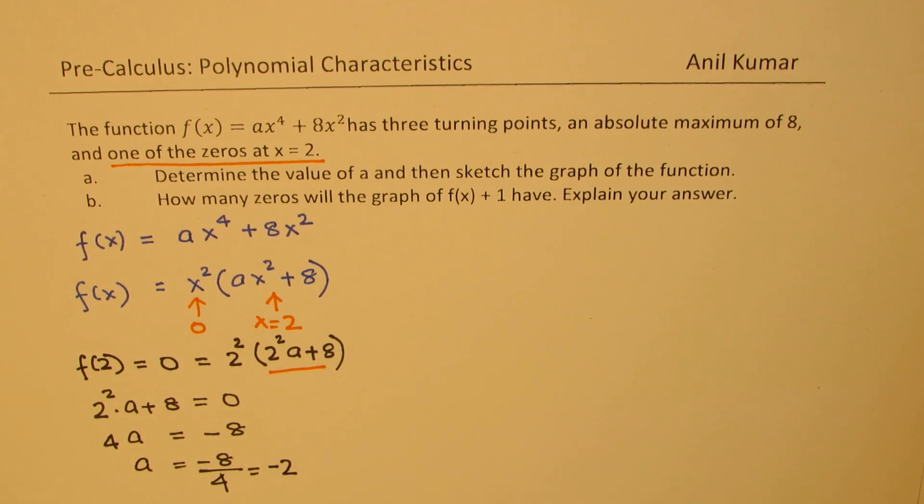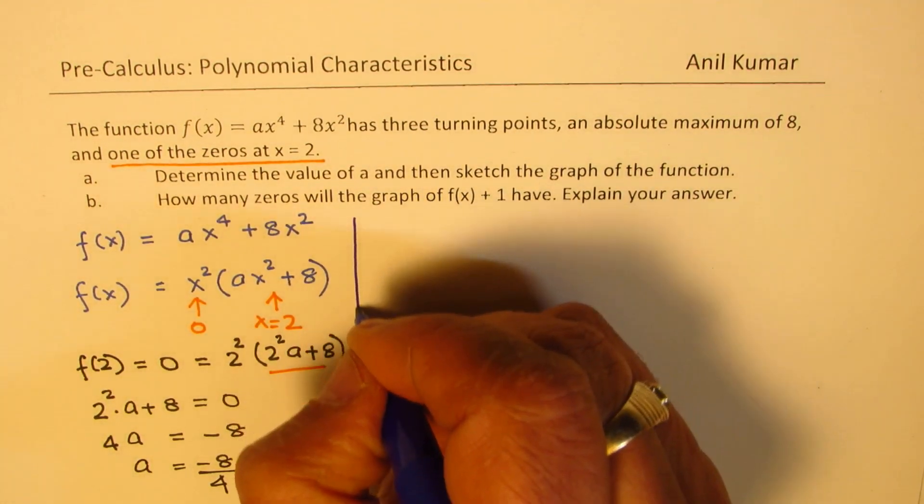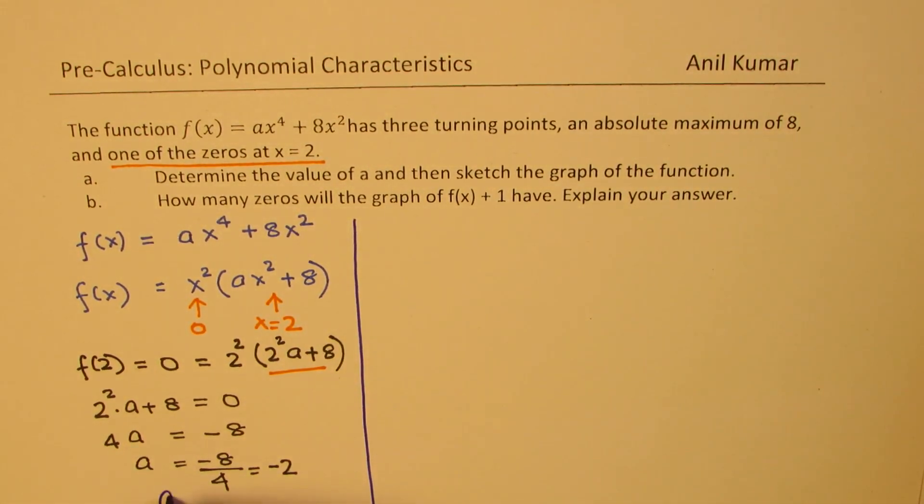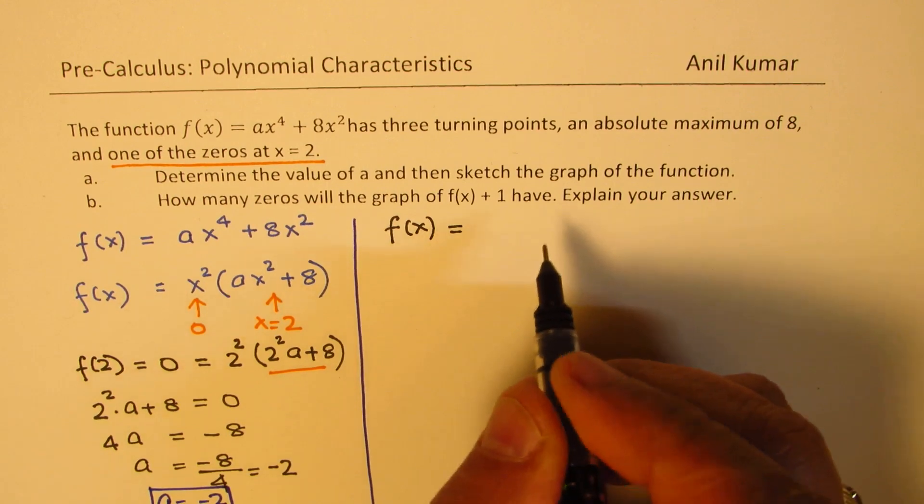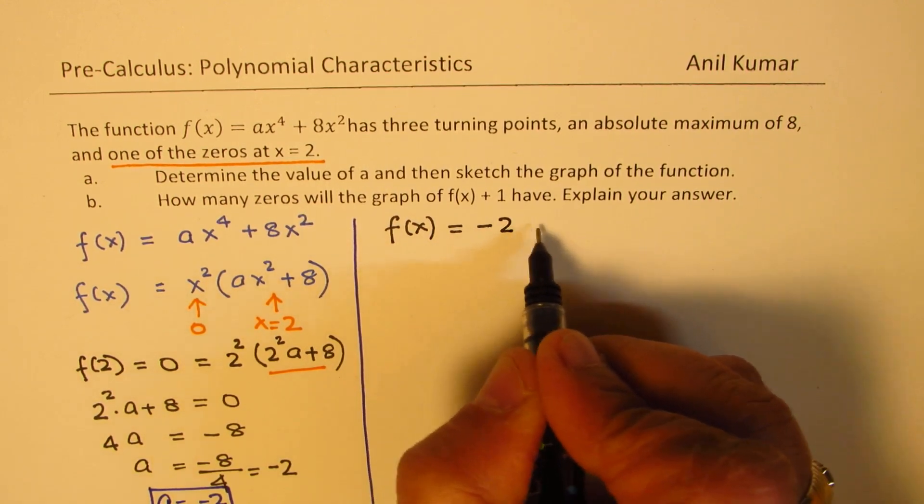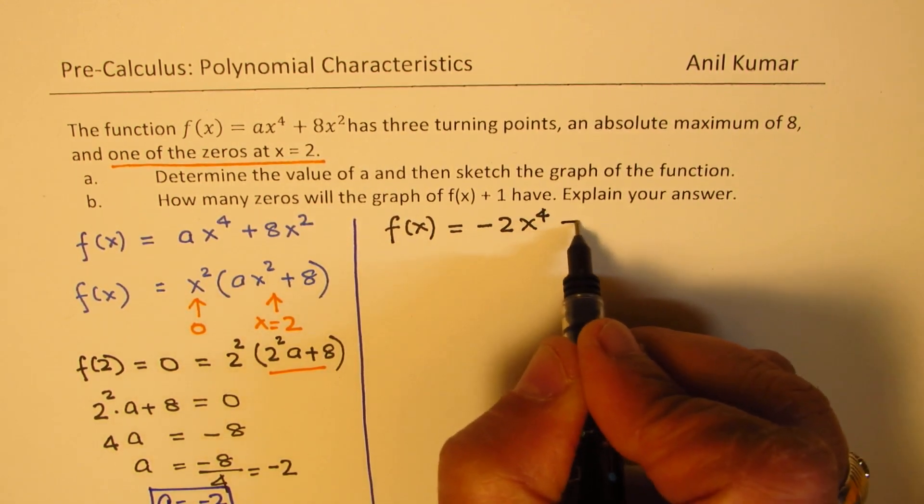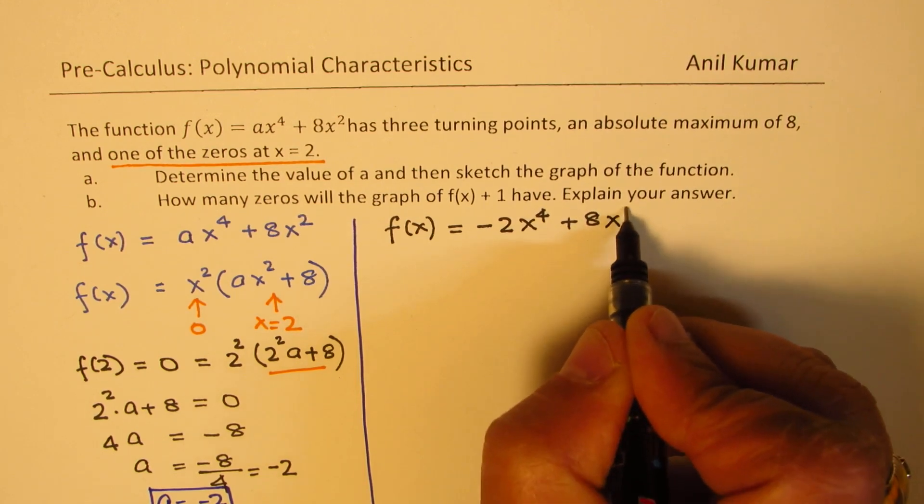So that means the value of a is minus 2. We can rewrite the function as f(x) equals minus 2x to the power of 4 plus 8x squared.